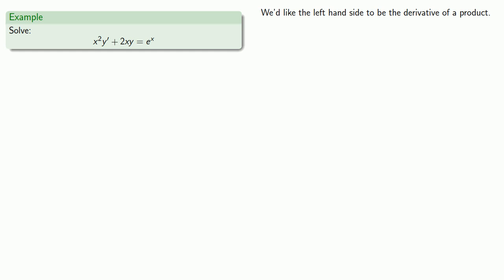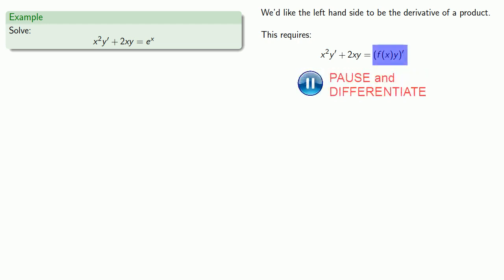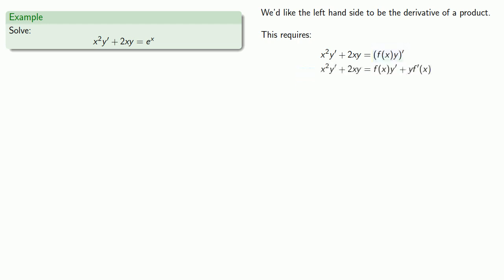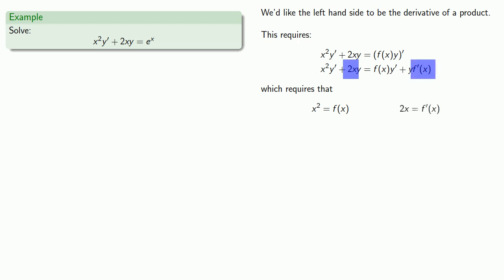If the left-hand side is going to be a product, this requires x²y′ + 2xy to be the derivative of f(x)·y. I know how to find the derivative of a product. Comparing the two sides, we see that x², the coefficient of y′ on the left, must be f(x), the coefficient of y′ on the right. Similarly, 2x, the coefficient of y on the left, must be f′(x), the coefficient of y on the right.